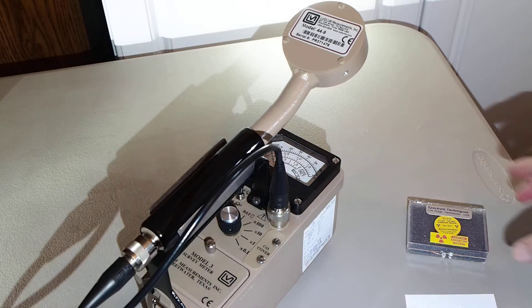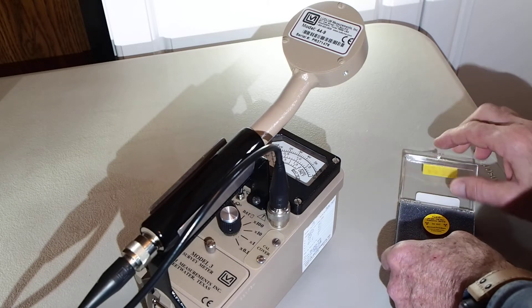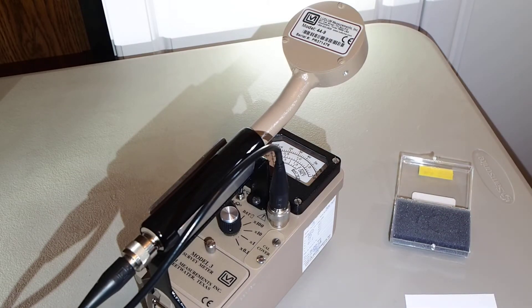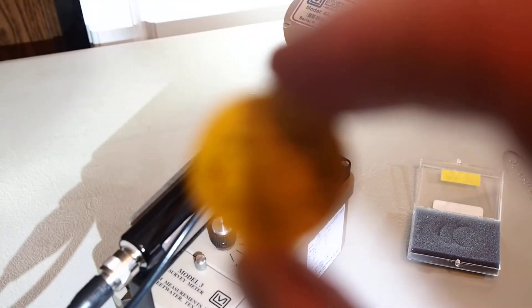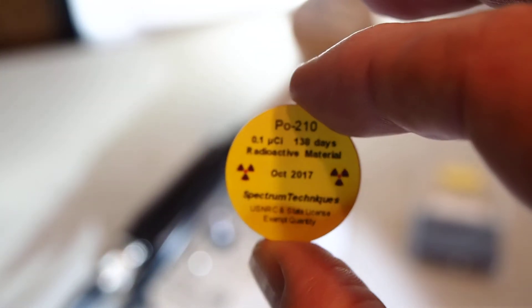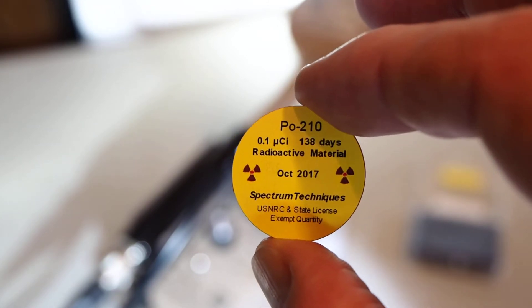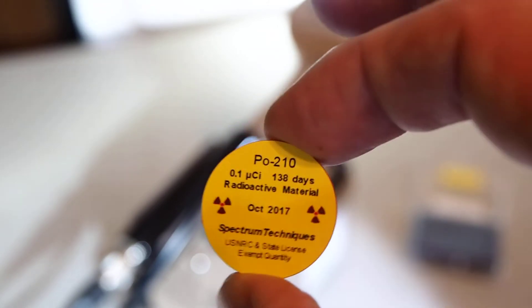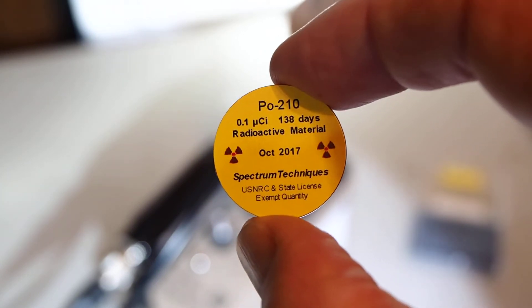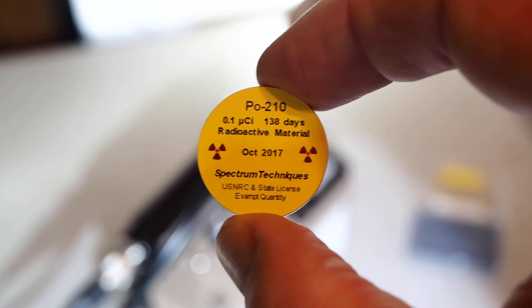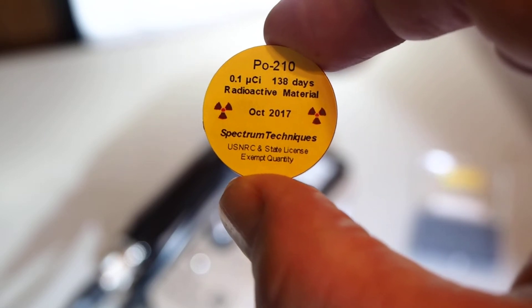Take a closer look at the polonium-210 disk source. This is the polonium-210 disk source dated October 2017, 0.1 microcuries. Polonium-210 has a half-life of 138 days, so it's a relatively short-lived decay daughter of uranium-238. Polonium-210 eventually decays down to lead-206 and becomes inactive.